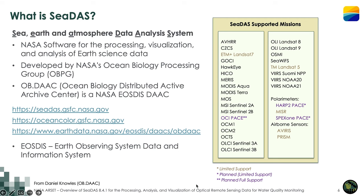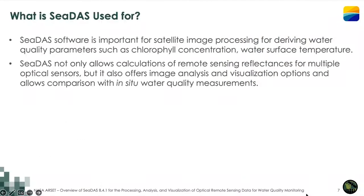In earlier RSET water quality trainings, we used CDAS to process data from MODIS, VIIRS, and Landsat OLI. CDAS is important software for satellite image processing, specifically for deriving water quality parameters such as chlorophyll concentration and water surface temperature. It also allows calculations of surface remote sensing reflectances, image analysis and visualization, comparison with in-situ water quality measurements, and statistical, mathematical, and spectral analysis of image data.